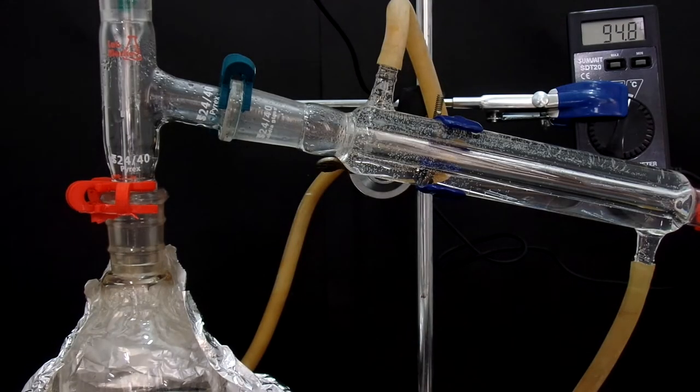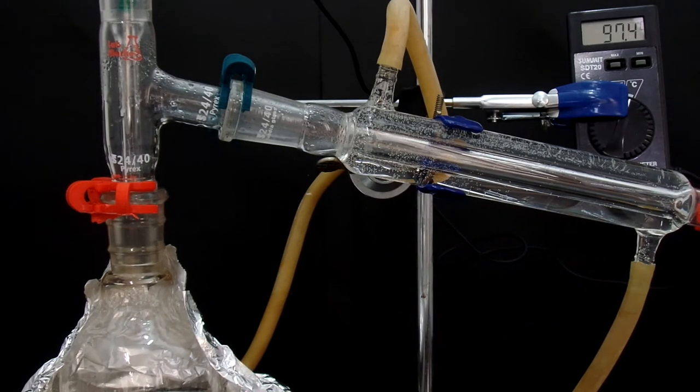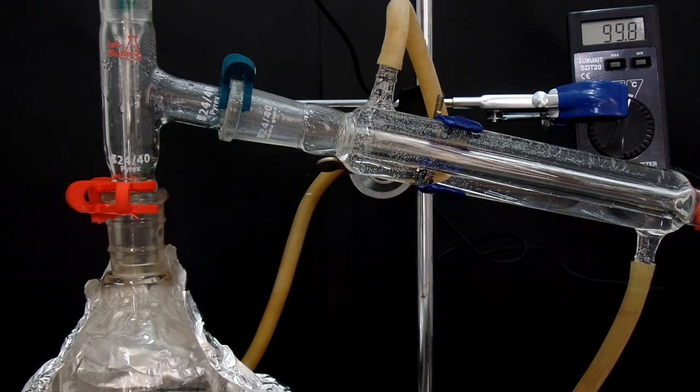Brown butyl acetate is transferred to a 250 ml round bottom flask and distilled. Butyl acetate has a boiling point of 126 degrees Celsius, but I think the thermal unit is not working correctly.